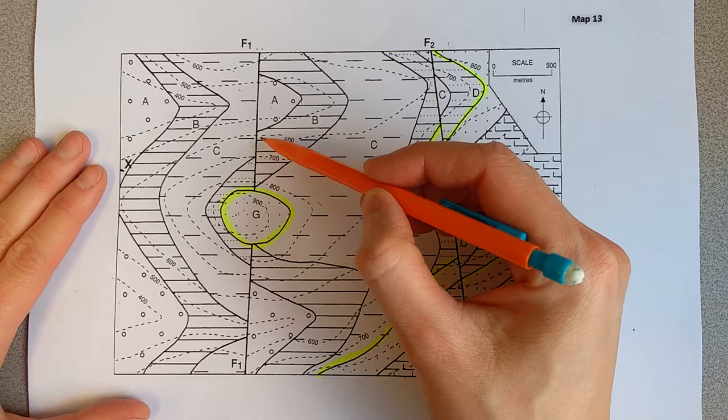They're dead straight lines, and you can see that they're causing offset, for instance, of this unit B. So it's being truncated by the fault and it's causing some kind of movement.